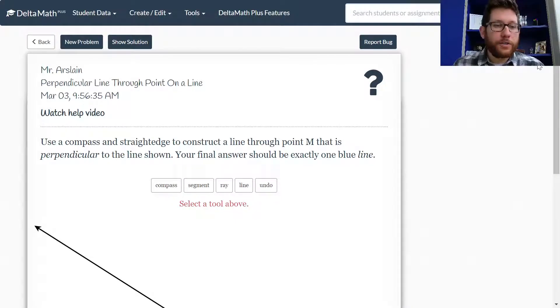Let's take a look at another construction. In this case, we've got perpendicular line through a point on a line. DeltaMath is a great tool for doing online constructions. It really simulates what we would do in real life if we were able to use compasses and straightedges to make our circles and lines.